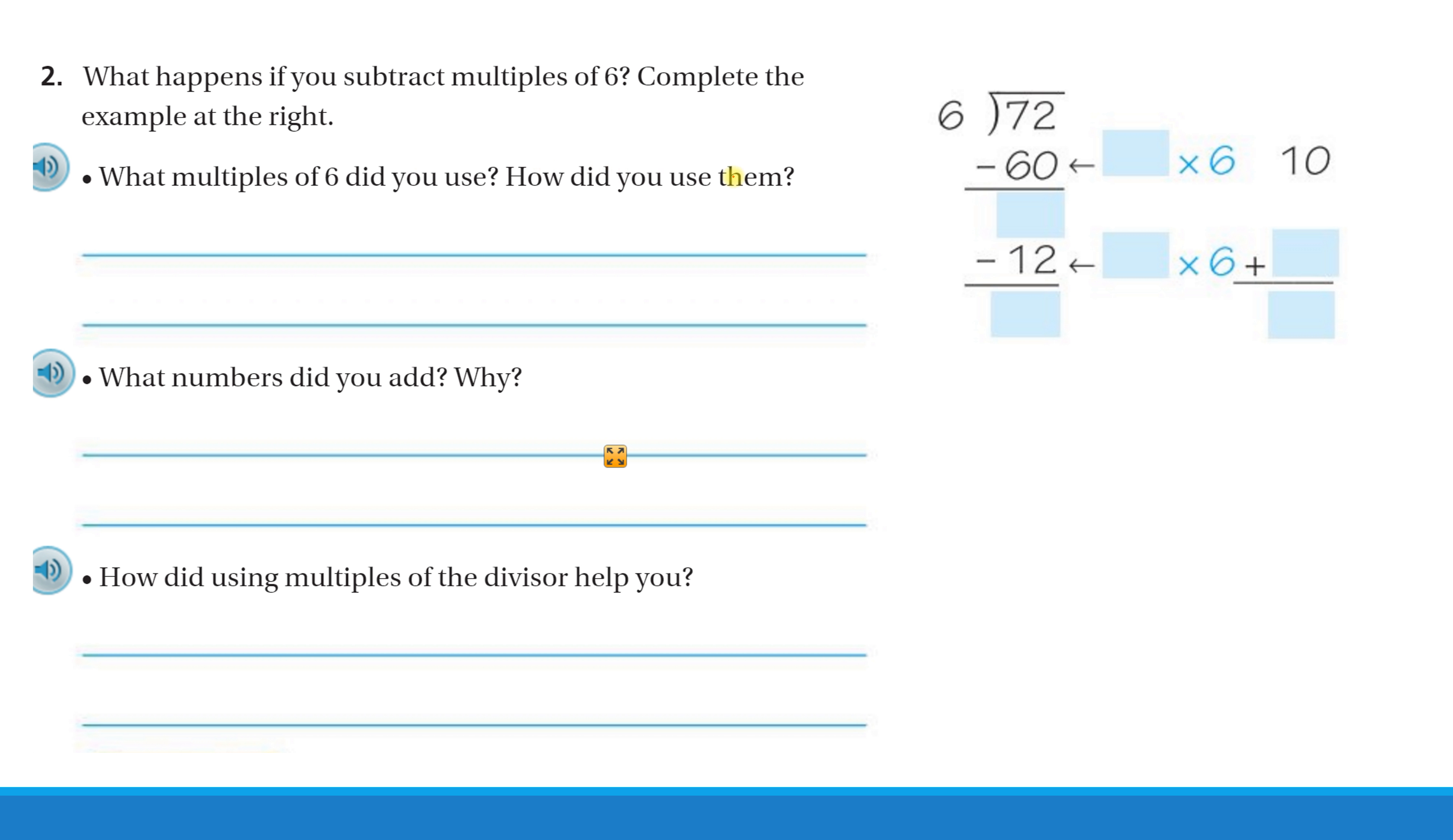So again, this is referring back to the problem you saw in the first video. These numbers, if you look here, we still have the divisor 6, we have the dividend of 72, so it's just asking us some more in-depth questions about the problem we already did. So it says, what happens if you subtract multiples of 6? Complete the example at the right. So if we look over here at our right, 6 into 72,